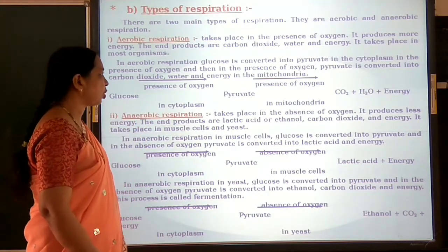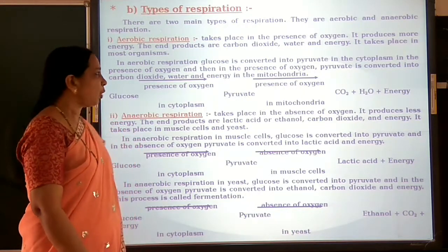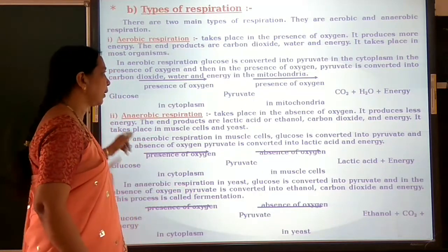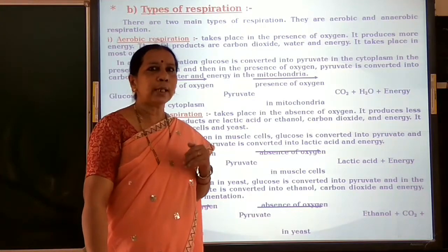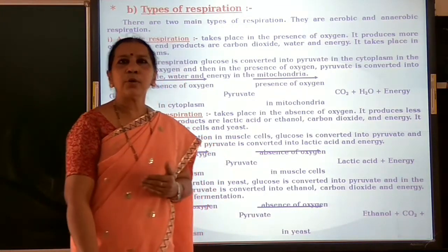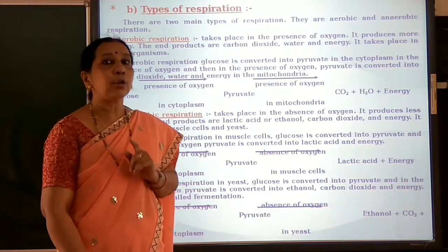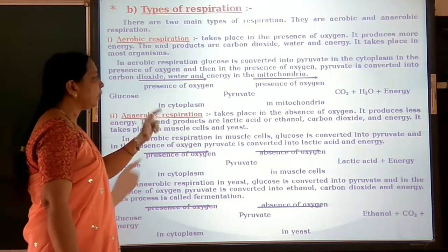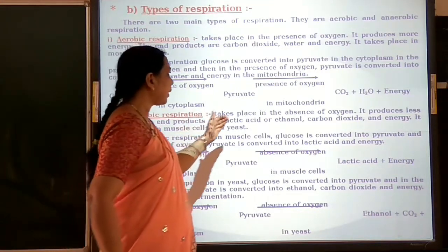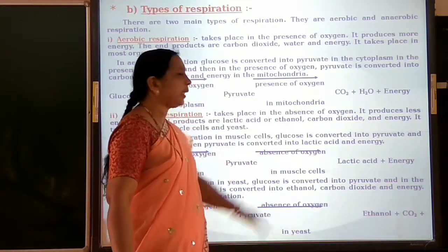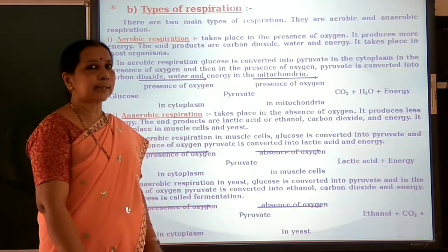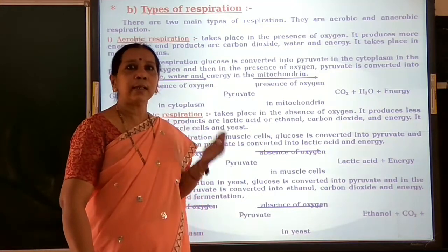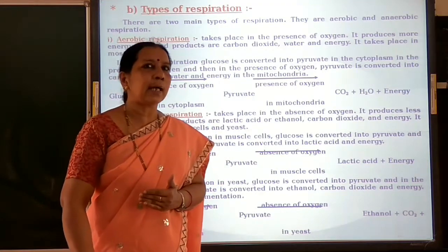Anaerobic respiration takes place in the absence of oxygen and produces less amount of energy. During aerobic respiration, a large amount of energy is produced; during anaerobic respiration, less energy is produced. The end products are either lactic acid or ethanol, carbon dioxide and energy. In the muscle cells, anaerobic respiration takes place under lack-of-oxygen conditions, producing lactic acid, carbon dioxide and energy.